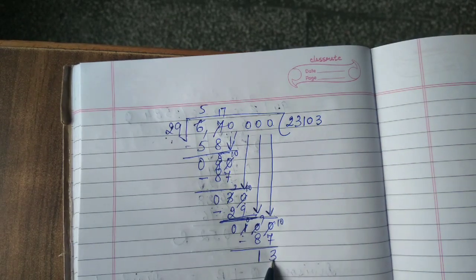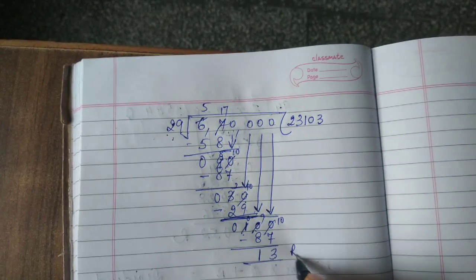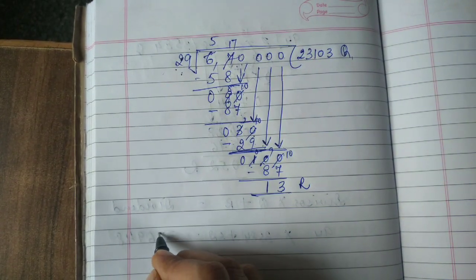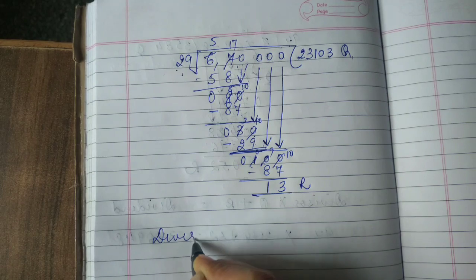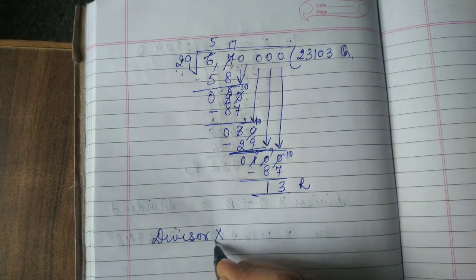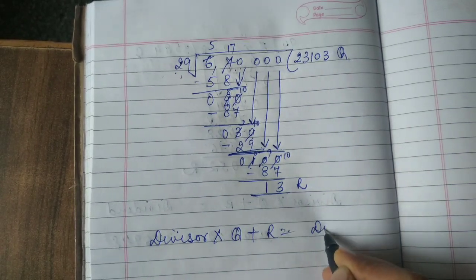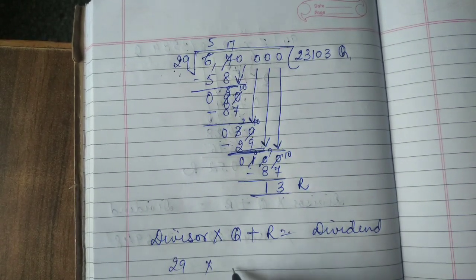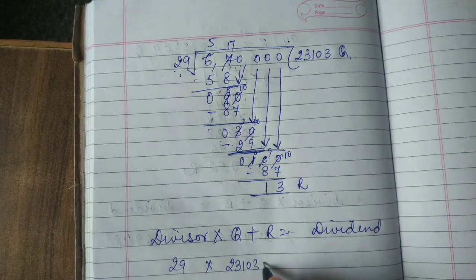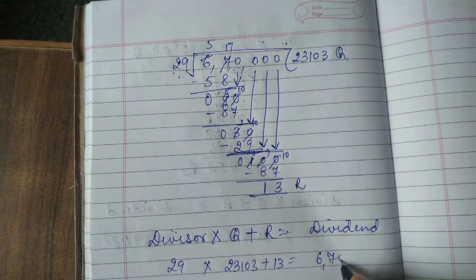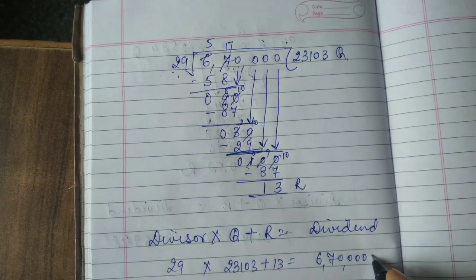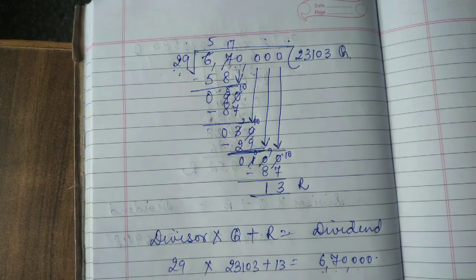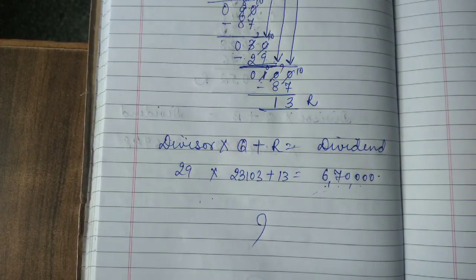This is the smallest number and we don't have any other number to bring down. So this is your remainder and this is your quotient. Now to verify: divisor multiplied by quotient plus remainder should equal the dividend. Divisor is 29, multiplied by quotient 23,103, plus remainder 13, should equal 6,70,000. Solve it and you will get your answer.